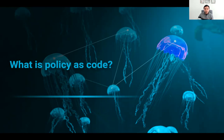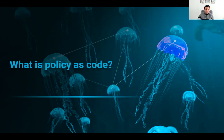From our previous example, if you want to ensure encryption at rest is applied to your environment, instead of manually checking all your storage systems, with policy as code you write a rule or policy that can programmatically check that the code provisioning and managing your storage system has encryption properly configured.